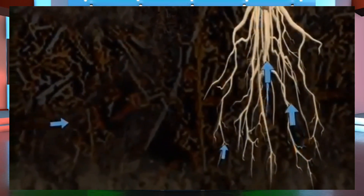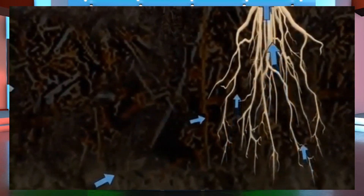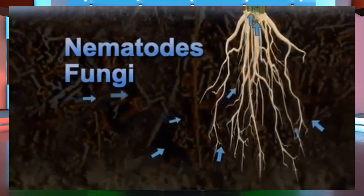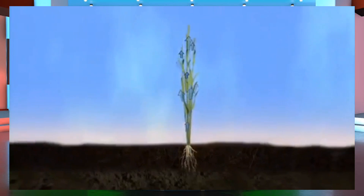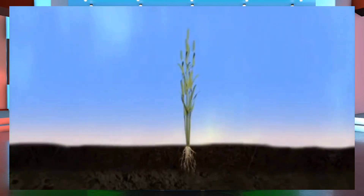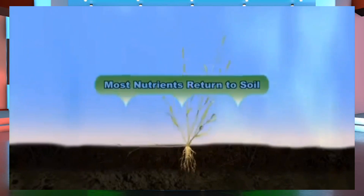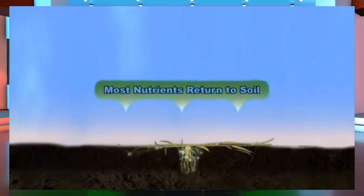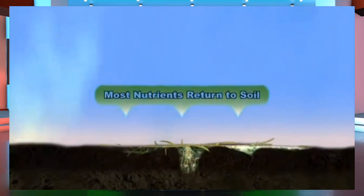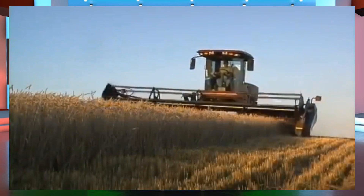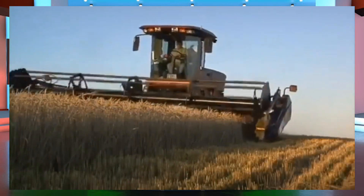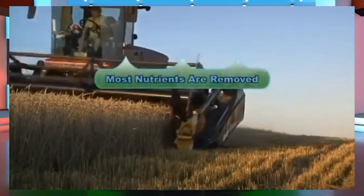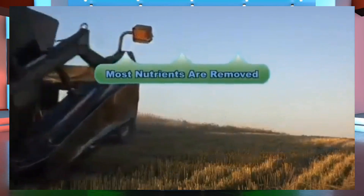Other nutrients are transported to the roots by activities of larger organisms like nematodes and fungi. With this network of supporting life forms, plants maintain the nutrient levels they need to grow. When the plant dies, most of these nutrients are returned to the soil and become the nutritional foundation for the next plant that grows there. On the other hand, farming requires the crop to be removed, and along with it, so are many nutrients.